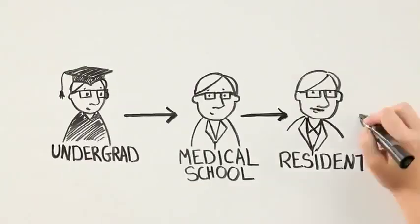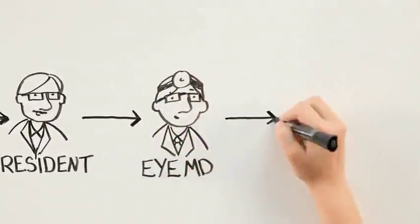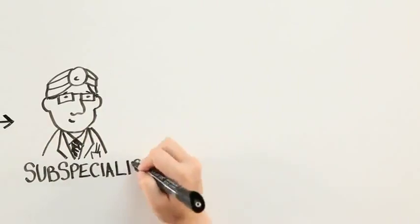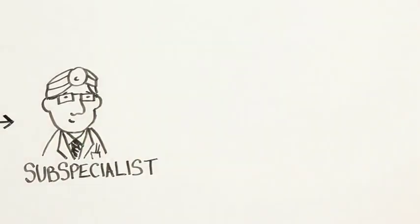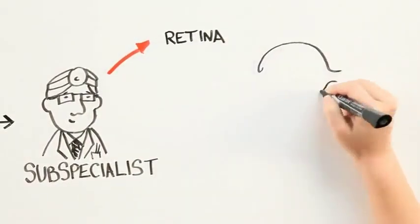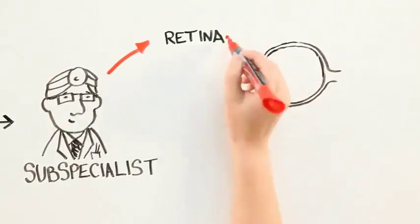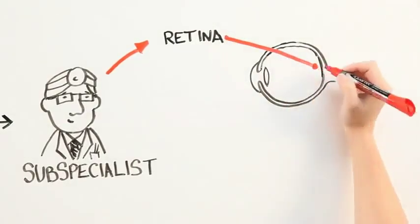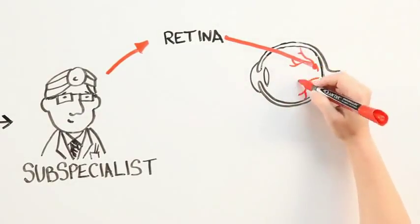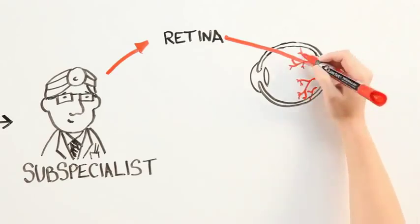After doing a residency you can even subspecialize in a specific area of the eye. So for instance, I did two extra years of training to become a retina specialist. So now I really only see patients with retinal problems and treat vision-threatening conditions like macular degeneration and diabetic retinopathy.